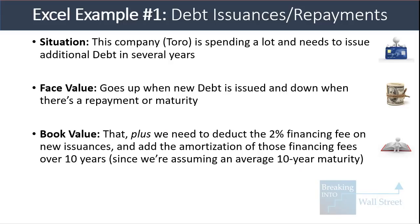The book value of debt changes based on all those same factors, but we also need to deduct the financing fee on new issuances and add back the amortization of those financing fees over 10 years, since we're assuming each issuance here will be outstanding for 10 years.